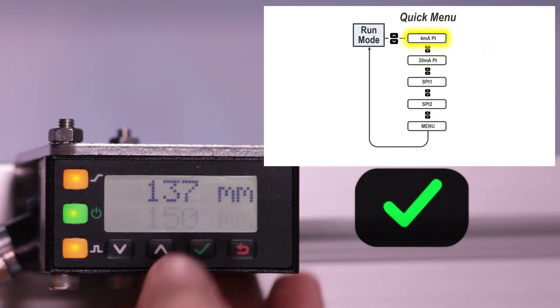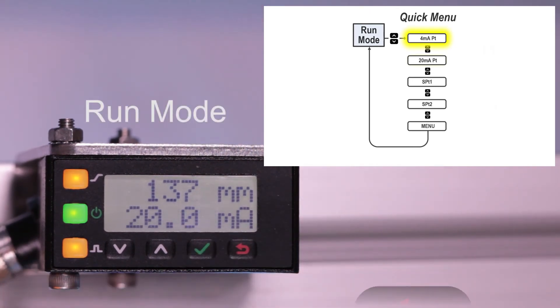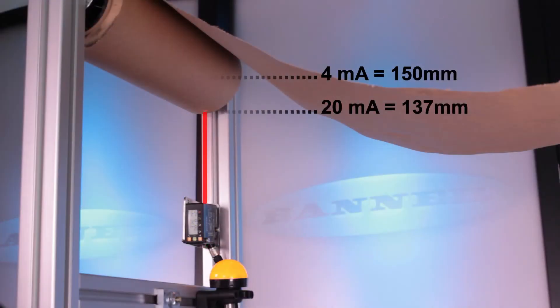Because the core diameter is known to be at 150mm, the 4mA point can be set at 150mm without having to unwind the roll to present a target.